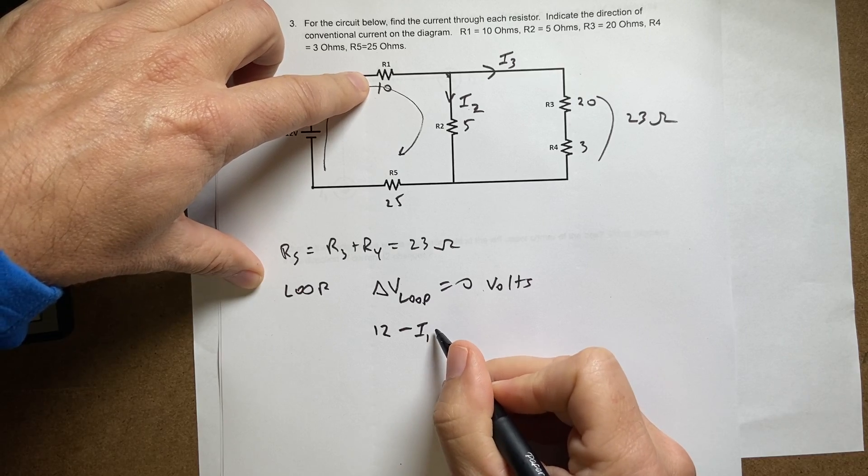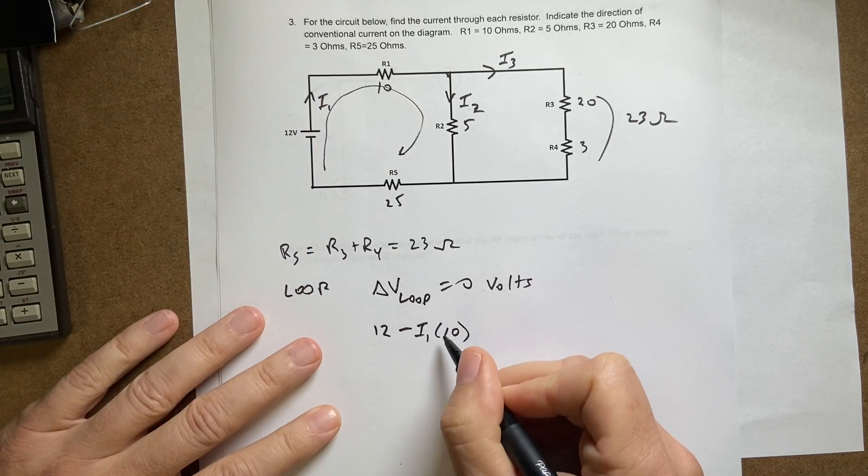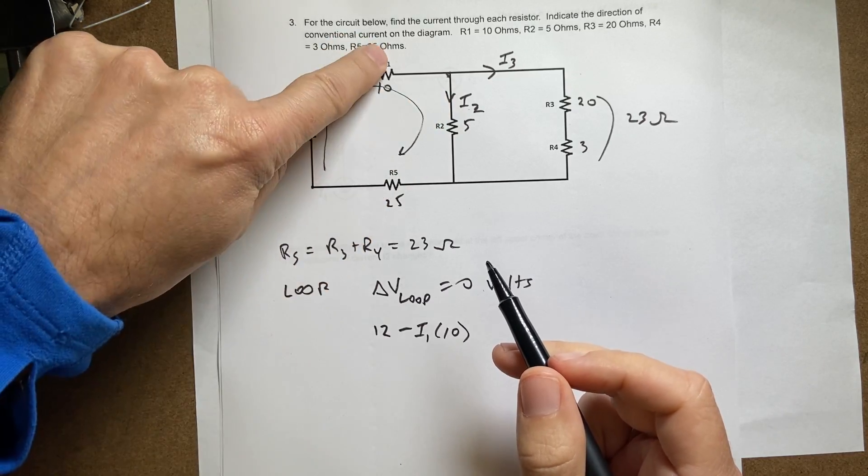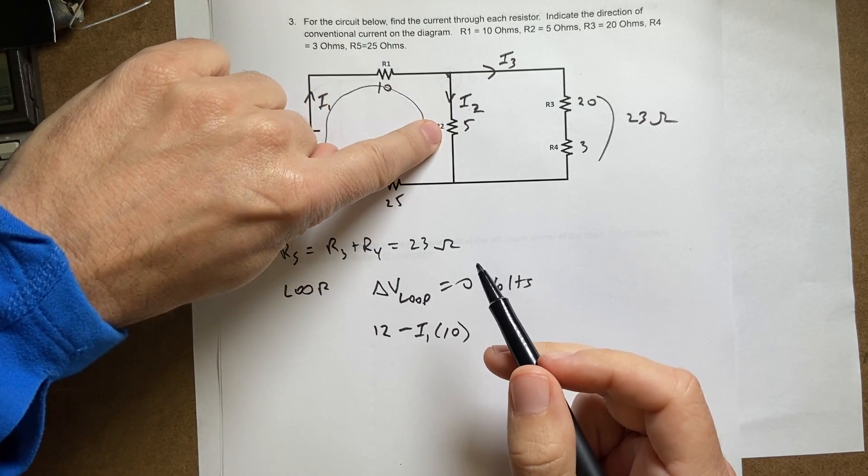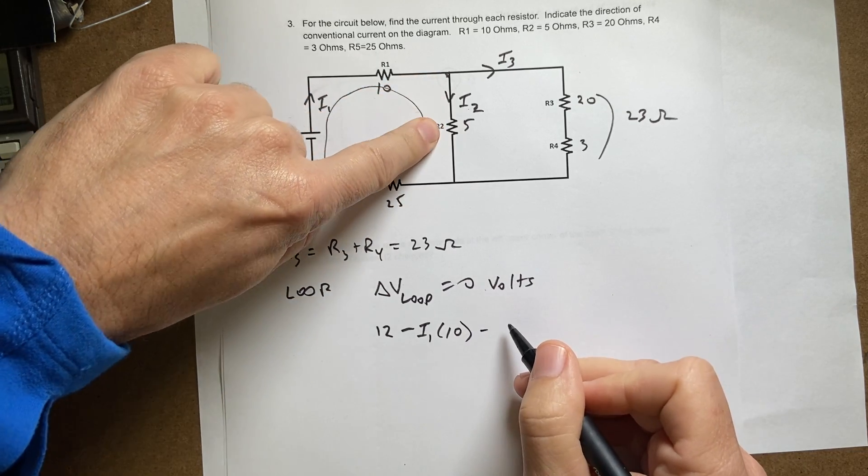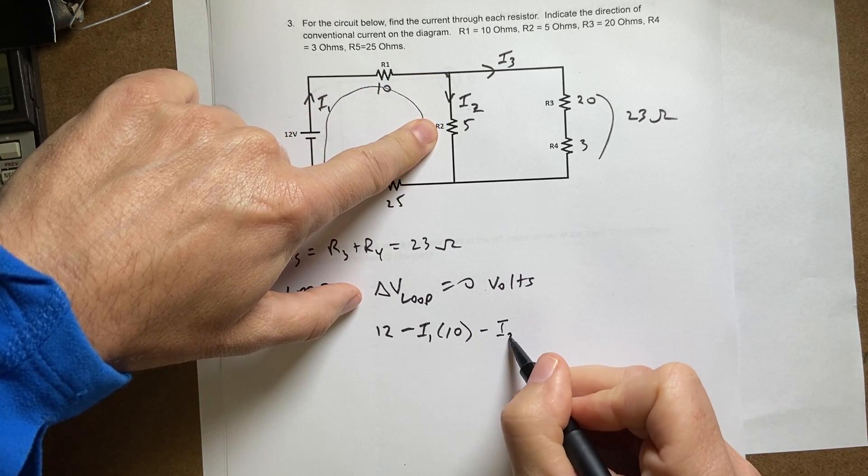So now I'm going to say I'm going to have a minus—I'm going in the same direction as the current, so it's going to be minus i2 times 5. And then down here, this is still again current i1, so I'm going to go in the same direction.